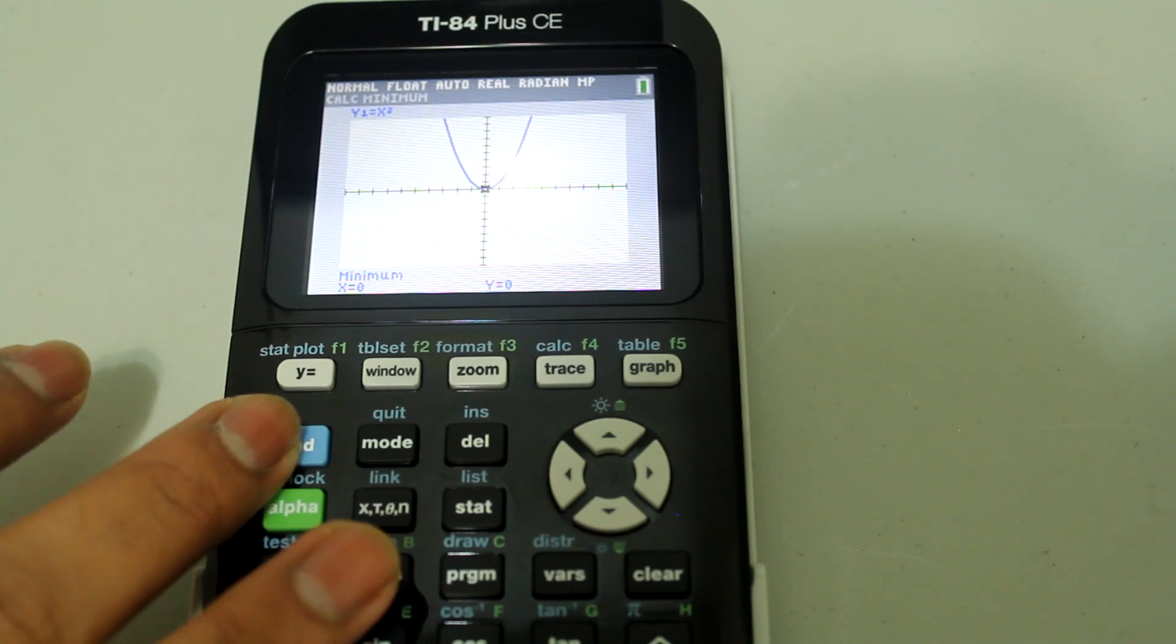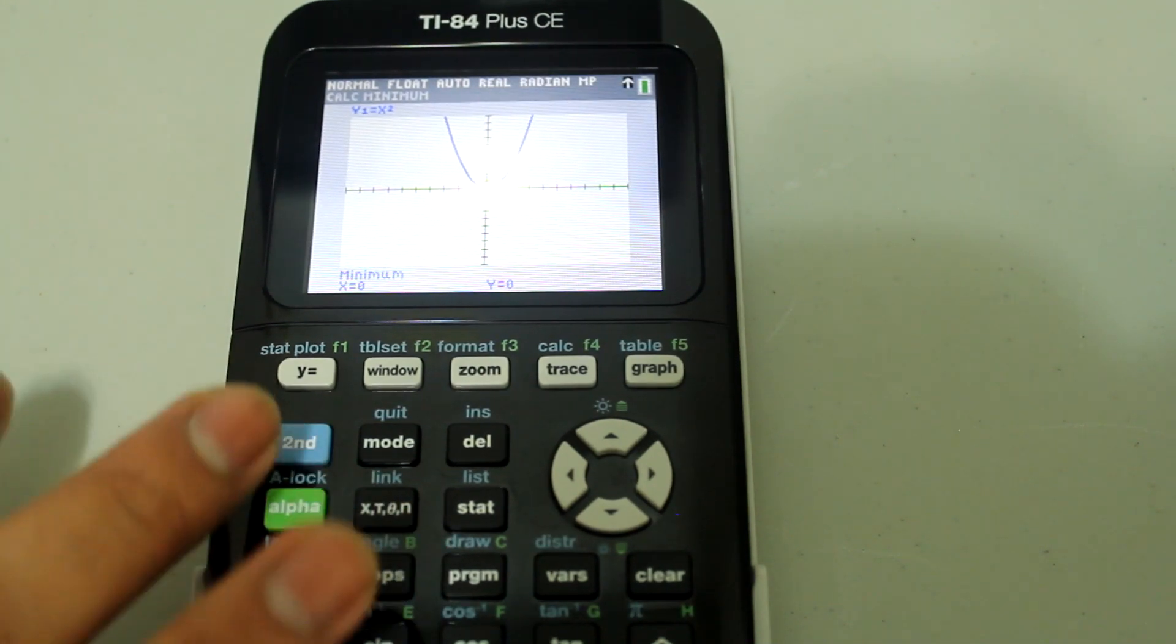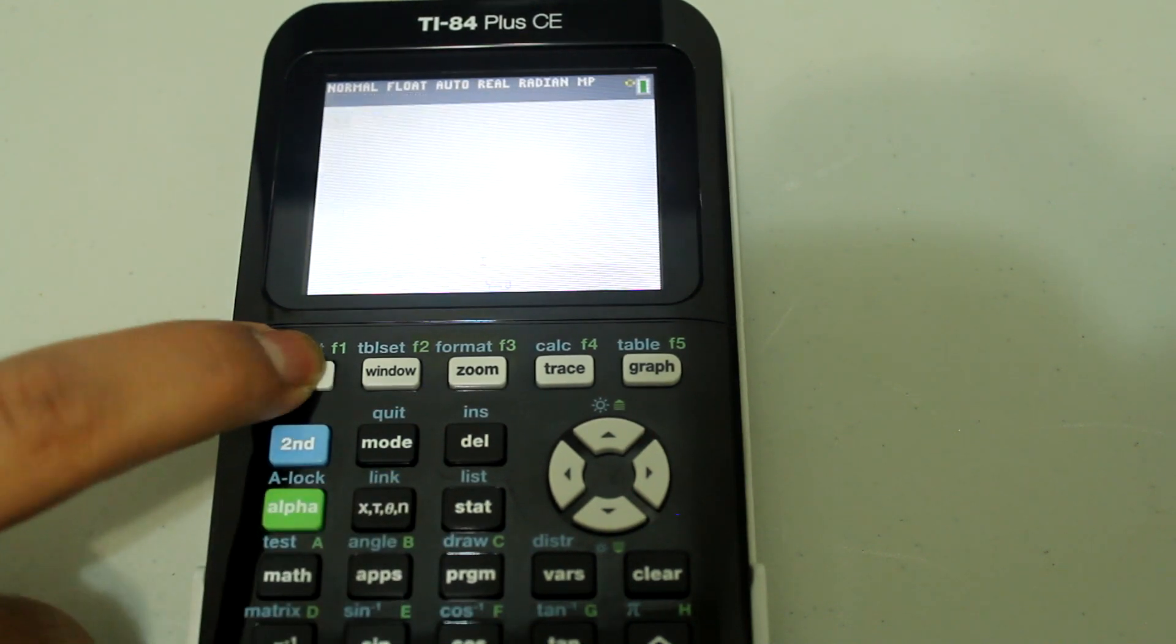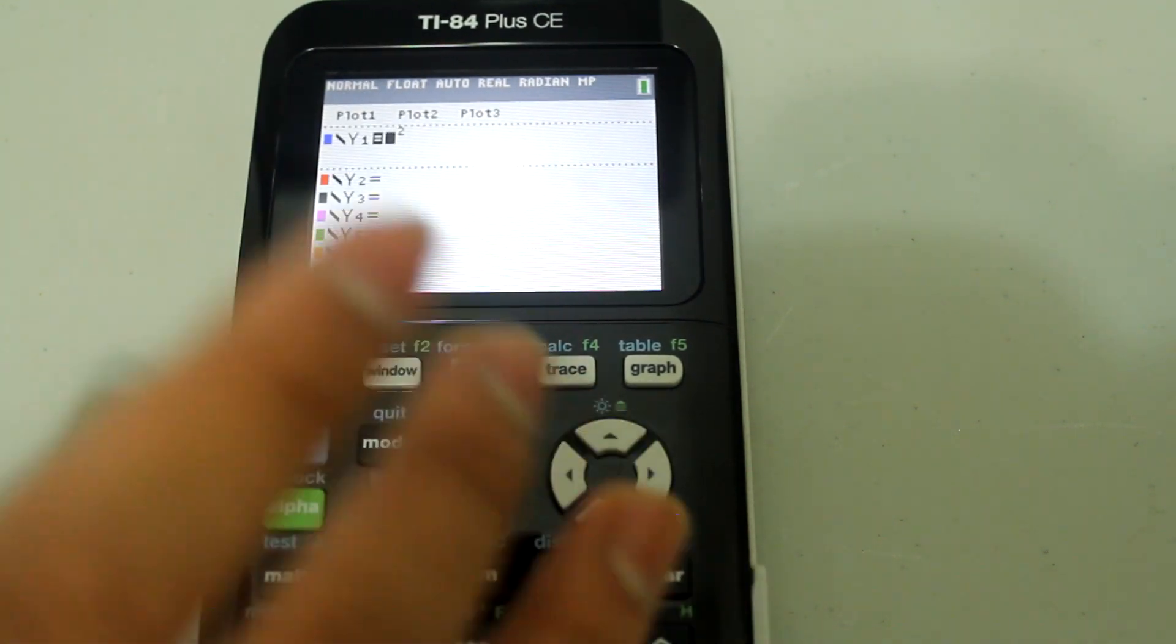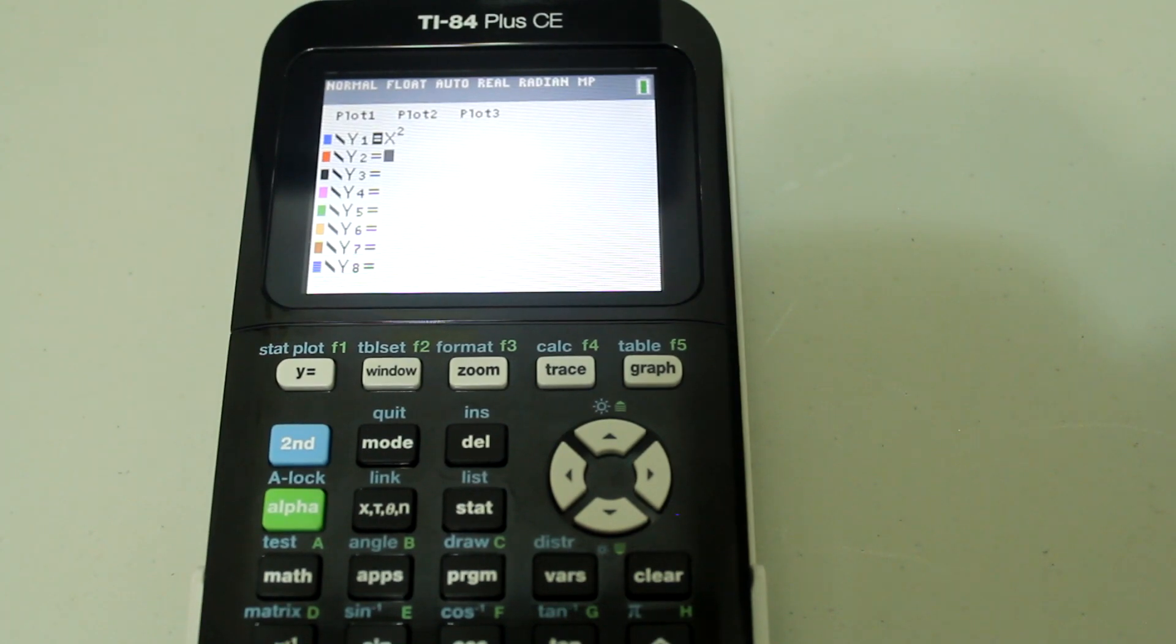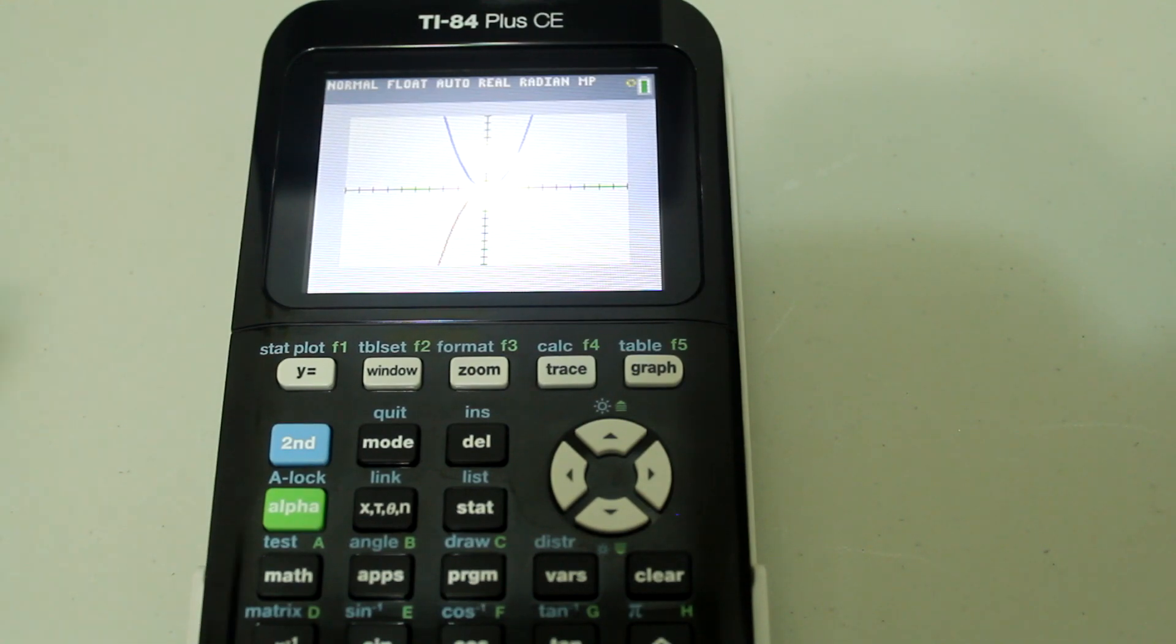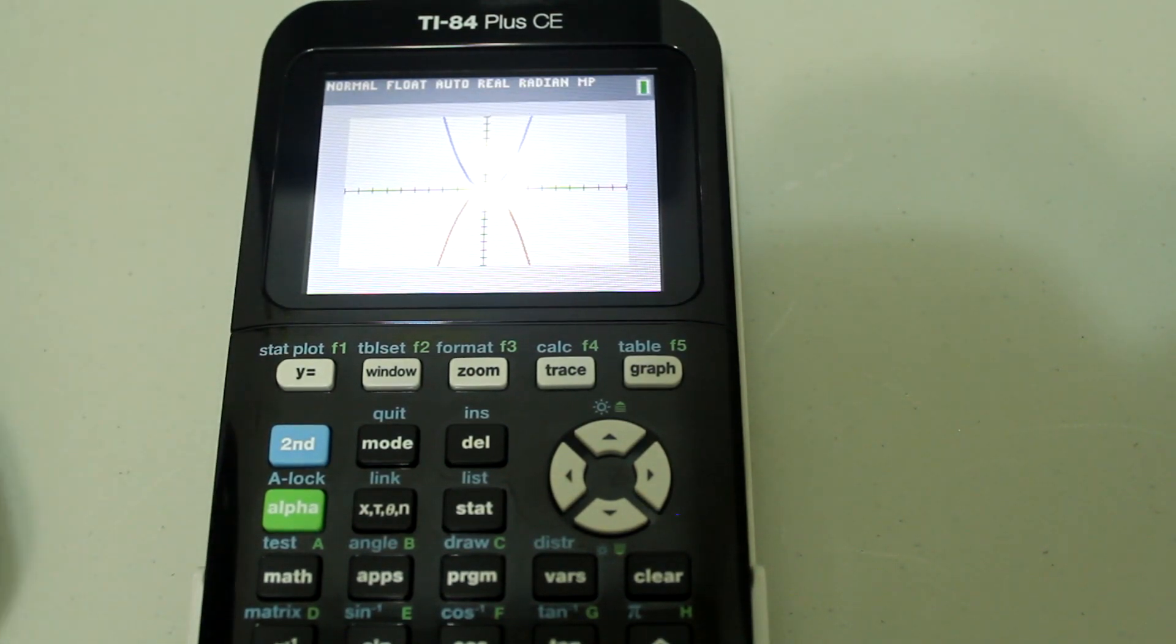And finding the maximum you'd follow almost the same procedure but with the maximum feature. So let's graph something different. Let's graph negative x squared.